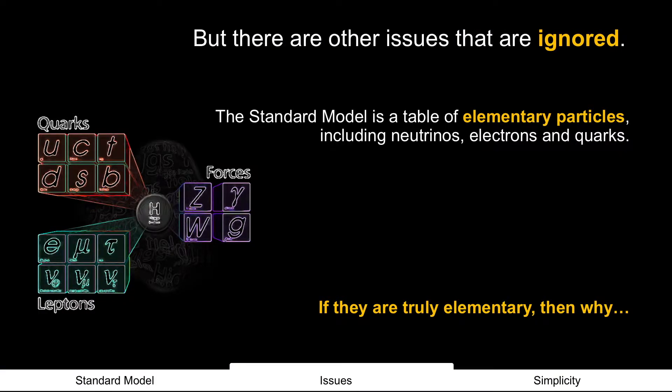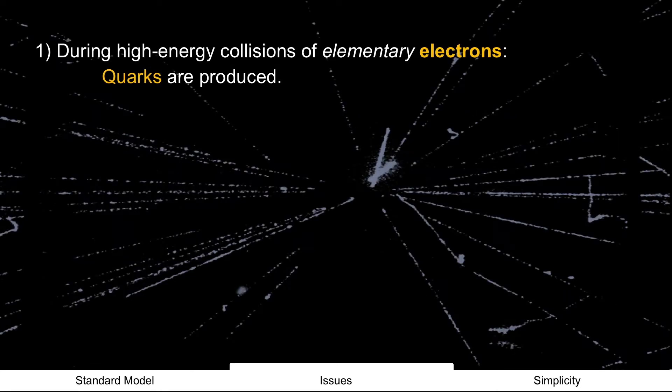But there are issues that are also ignored, right? The standard model is supposed to be a table of elementary particles. Neutrinos and electrons and quarks, for example. Alright, so if these are truly elementary then answer this. Why? During collisions of electrons, which are supposed to be elementary, quarks are produced. Why is that important? Because a quark is supposed to be an elementary particle. It was just produced.